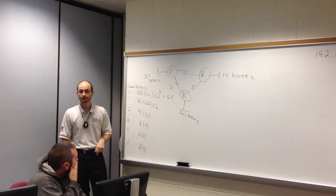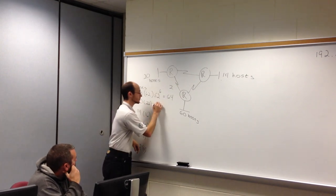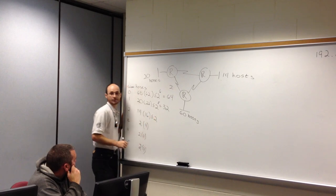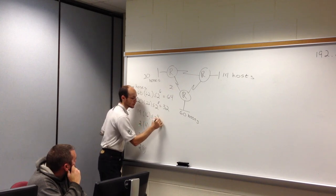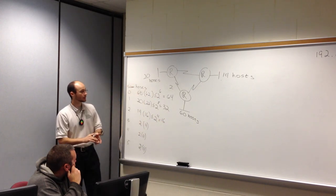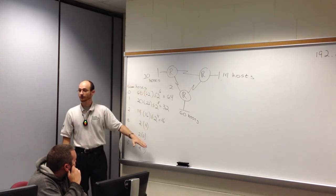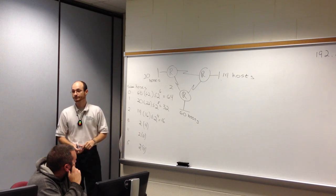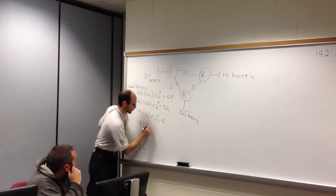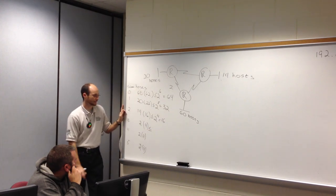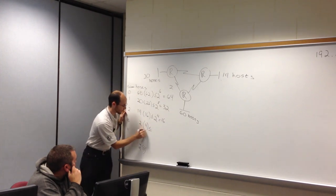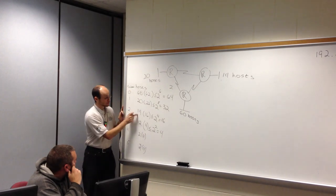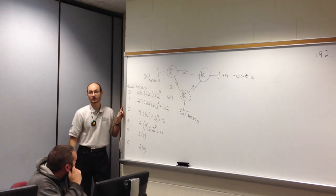The subnet mask for subnet zero: all ones in the network portion, all zeros in the host portion. Originally given 24 ones, so 255.255.255. In the fourth octet I have a one in 128 and a one in 64 — 128 plus 64 is 192. So the subnet mask is 255.255.255.192. This mask is used for every host and router interface on subnet zero.